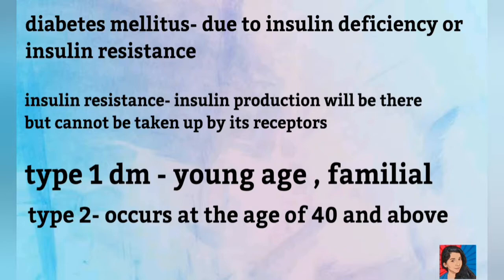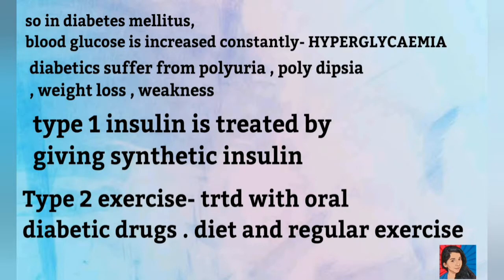Diabetes mellitus has two types: type 1 and type 2. Type 1 typically presents in younger patients and involves no insulin production. Type 2 comes in patients aged 40 and above and involves insulin resistance. Diabetes mellitus results in constantly elevated blood glucose levels — this is hyperglycemia.